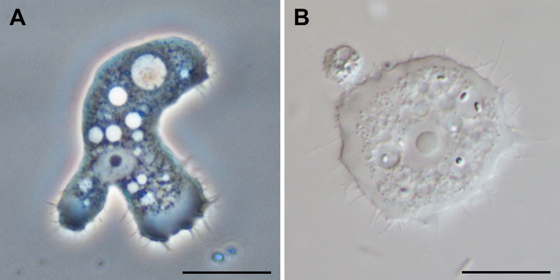Discosia is a class of amoebozoa, consisting of naked amoebae with a flattened, discoid body shape. Members of the group do not produce tubular or subcylindrical pseudopodia, like amoebae of the class Tubulinia.